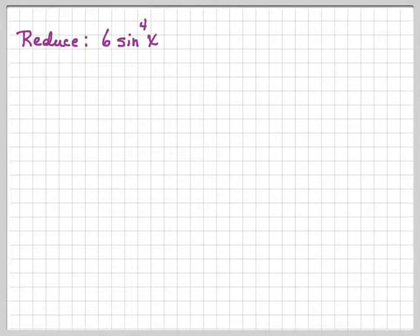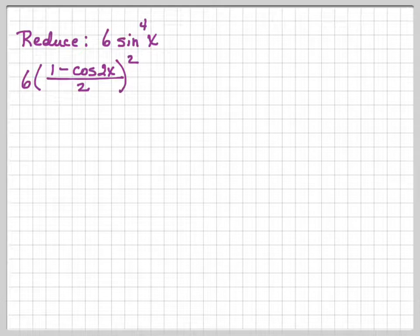So we're looking to reduce 6 sine to the fourth x to something that does not have an exponent greater than 1. All right, so here's what we're going to do. Sine squared x is 1 minus cosine 2x over 2, and then we have to square it because we have sine to the fourth x.